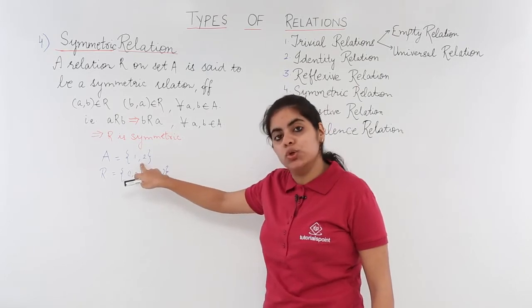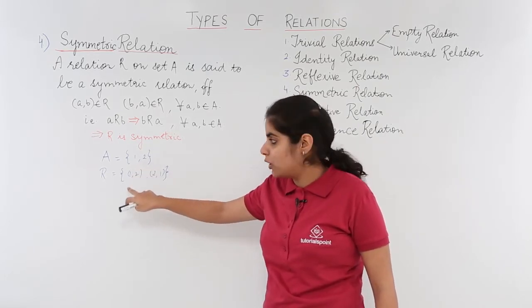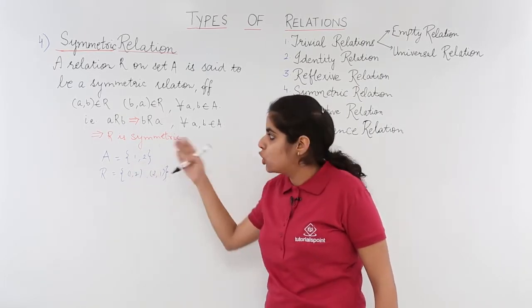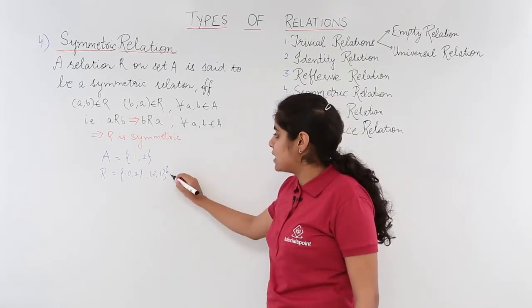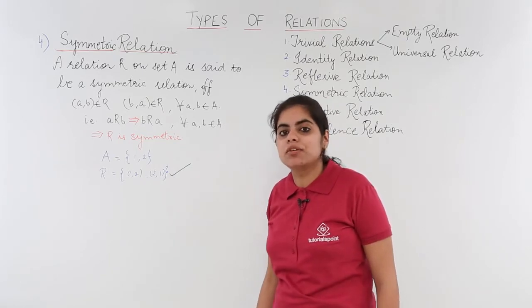(1, 2) is present, yes it is. (2, 1) is present, yes it is. So this relation is simply an example of symmetric relation.